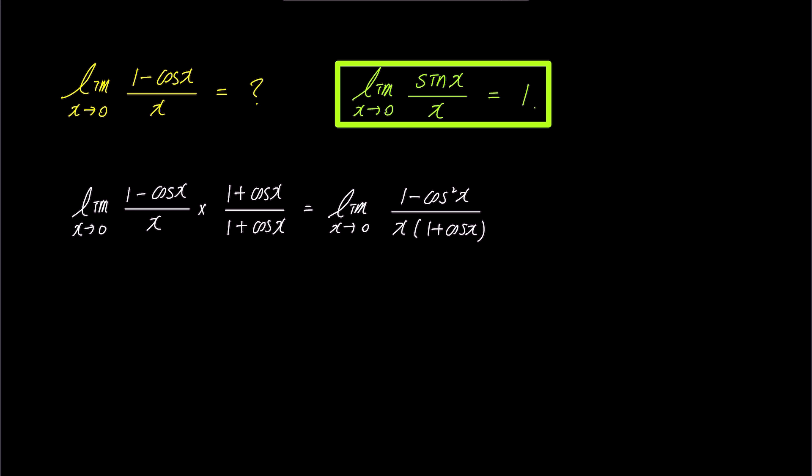Using one of the trigonometric properties sine squared x plus cosine squared x is 1, we can rewrite 1 minus cosine squared x as sine squared x.